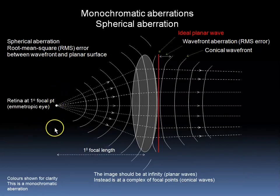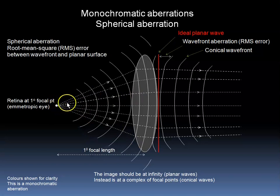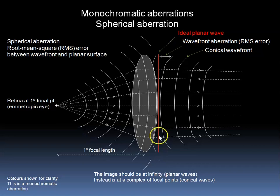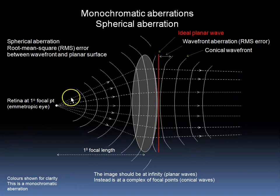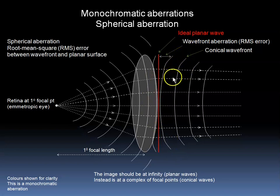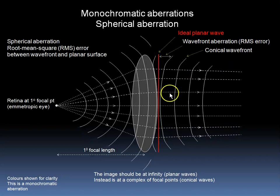If we represent the retina as being here, at the primary focal point of the optical system of the eye — which we represent by a lens here — then the diverging light coming from this point on the retina should be conjugate with infinity. In other words, a planar wave should emanate from that optical system. Another way of saying planar wave is parallel rays of light. With spherical aberration, the peripheral parts of the wave undergo more refraction than the central parts. We have a conical wave front which is more curved in the periphery than in the center, meaning the more peripheral rays are bent slightly inward compared to the central ones. The difference between the ideal planar wave and the actual conical wave is called the wave front aberration.